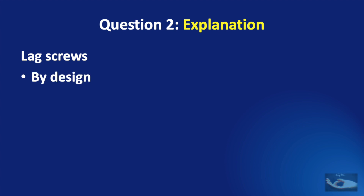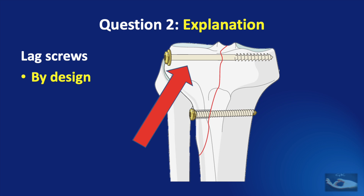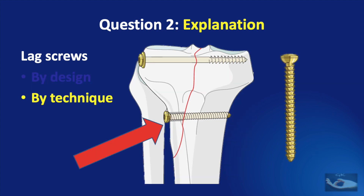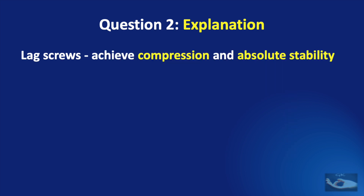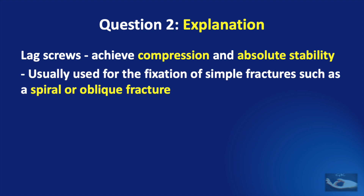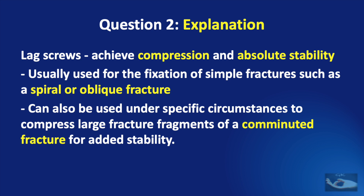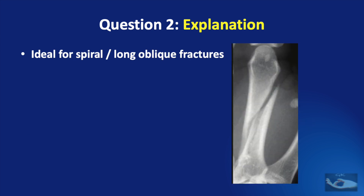Some screws achieve compression by their very design. This partially threaded screw acts as a lag screw by virtue of its design. Even if the screw is fully threaded, it can act as a lag screw and achieve compression by using the technique of lag screw fixation. Whether by design or by technique, lag screws achieve compression and absolute stability. On the hand, they are usually used for the fixation of simple fractures such as a spiral or oblique fracture. They can also be used under specific circumstances to compress large fracture fragments of a comminuted fracture for providing added stability.